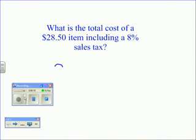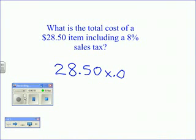First, you take the original cost and multiply it by the sales tax, which is 8%. The answer is $2.28. That is the sales tax to be added to the original price.